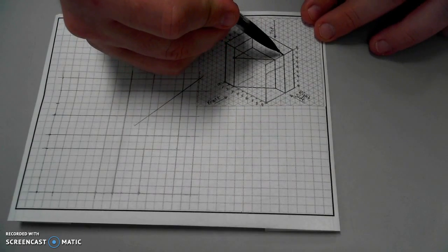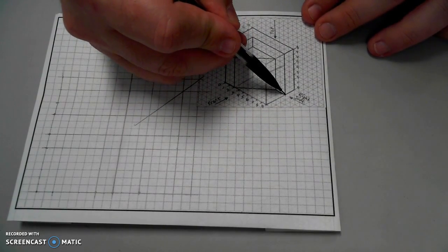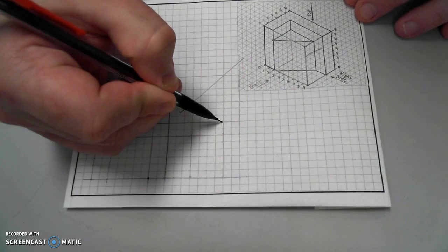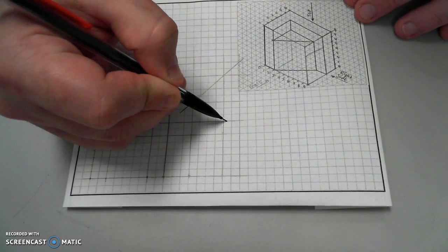This rectangle, which represents this surface face on the right side, is seen here. Eight units high, two units deep.